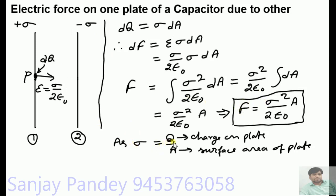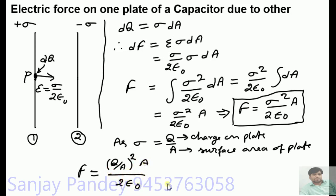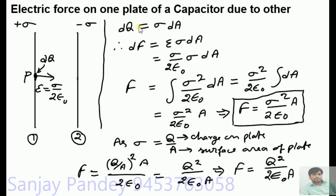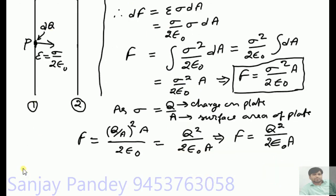As σ = q/A, we can write F = (q/A)² · A / (2ε₀), which simplifies to F = q² / (2ε₀A). So the force of attraction on one plate due to the other is F = q² / (2ε₀A).